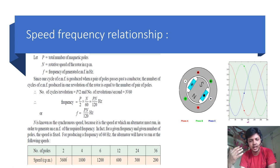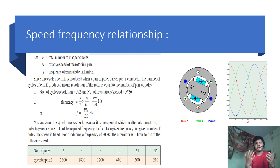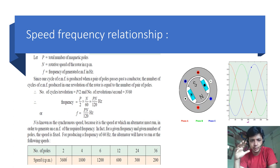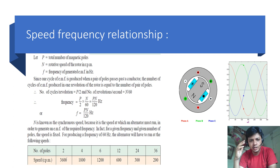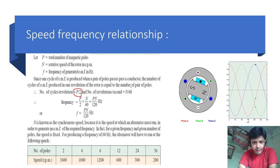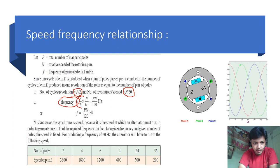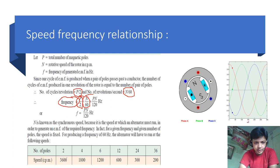One cycle of EMF is produced when a pair of poles is passed by a conductor. So the number of cycles of EMF produced in one revolution of the rotor is equal to the number of pairs of poles. If we multiply the number of cycles per revolution, that is P/2 (pairs of poles), with the number of revolutions per second, that is N/60, then we get the number of cycles per second. The number of cycles per second is nothing but frequency. So frequency f = PN/120 Hz.